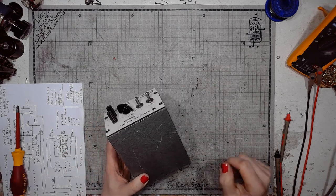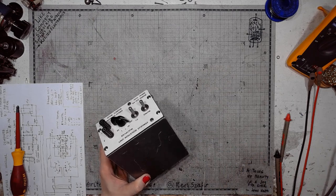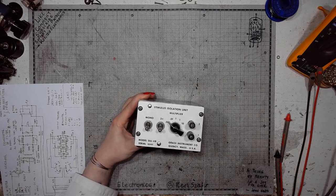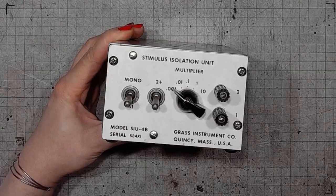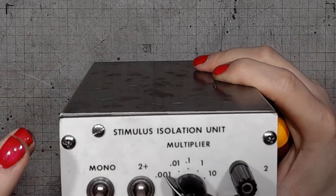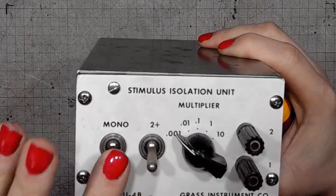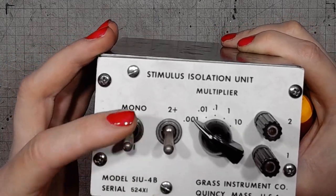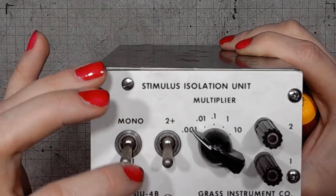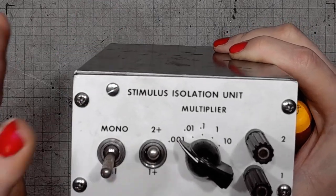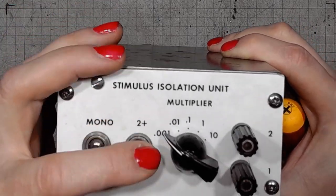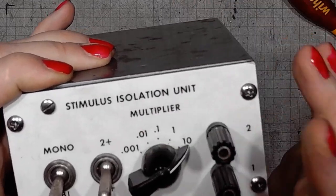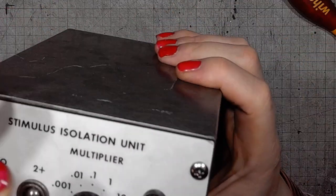Here we are at the bench. Let's zoom on in. The front panel has two pretty cryptic switches: mono and bi, 2+, and 1+. We'll find out what those switches do. There's also a range switch and a pair of terminals.